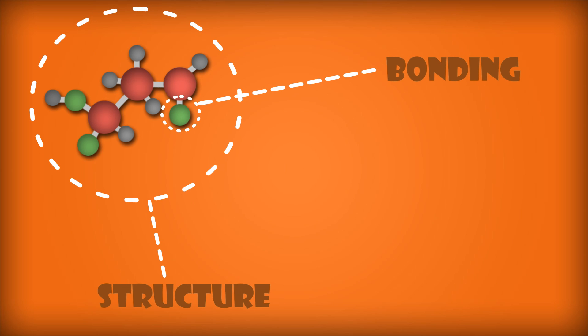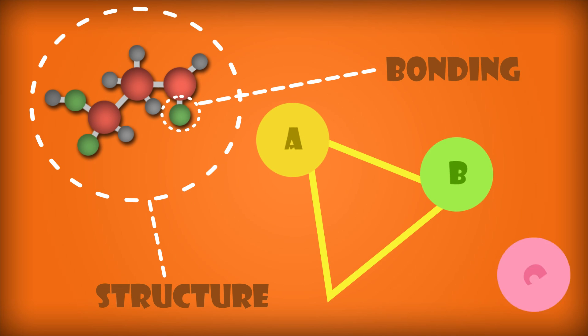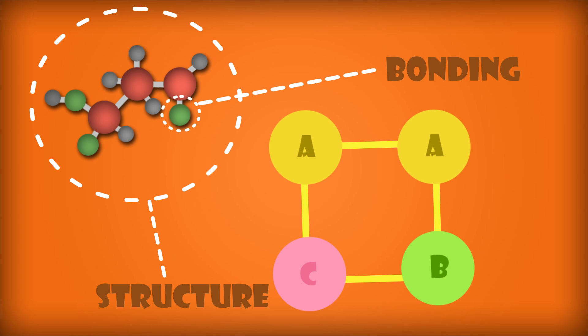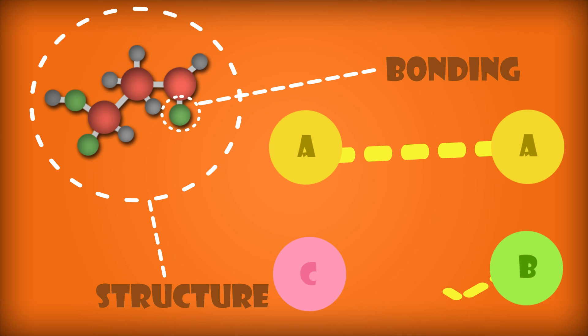Scientists have long known that the key to interpreting the properties of a chemical is to understand its structure and bonding. Structure refers to the way atoms are arranged in space, and bonding describes the forces that hold adjacent atoms together.